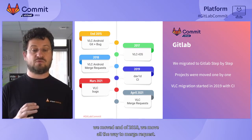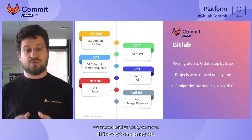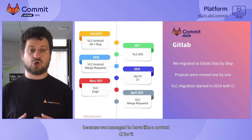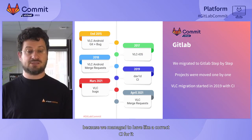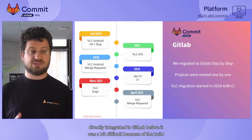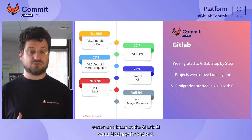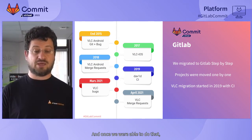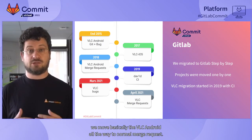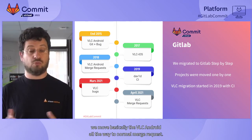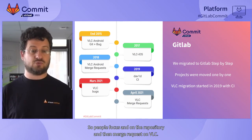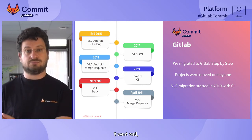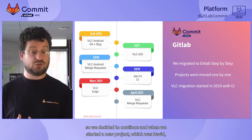In late 2018, we moved Android to merge requests. One of the main reasons was that we managed to have a correct CI for Android directly integrated in GitLab. Before, it was a bit difficult because of our build system and because the GitLab CI was a bit shaky for Android. Once we were able to do that, we moved VLC Android to a normal merge request workflow — people fork the repository and create merge requests.